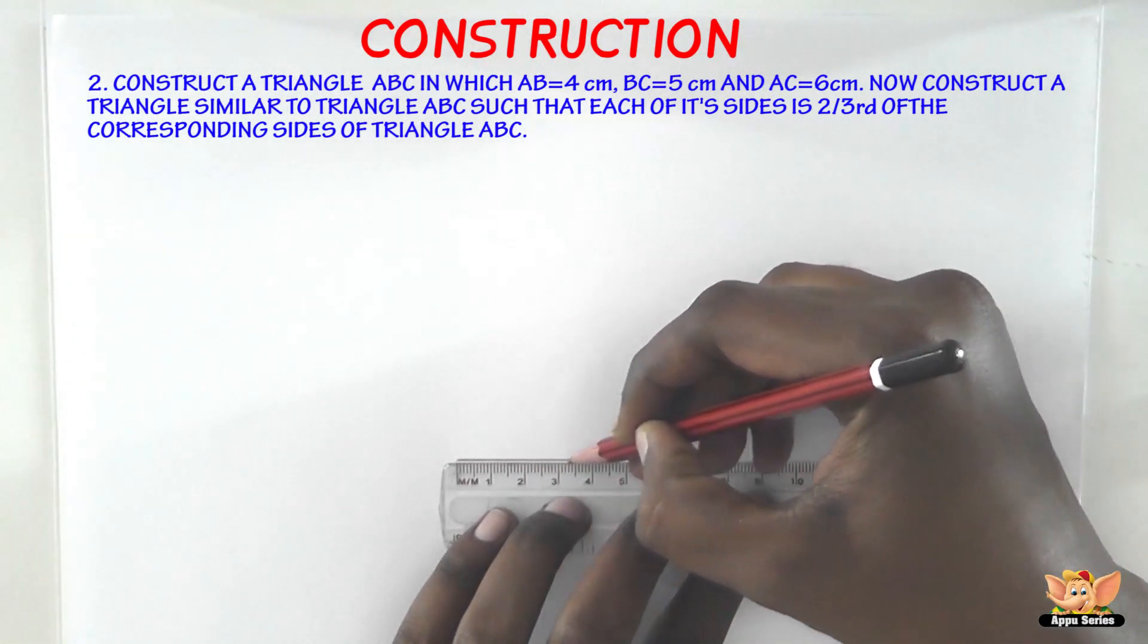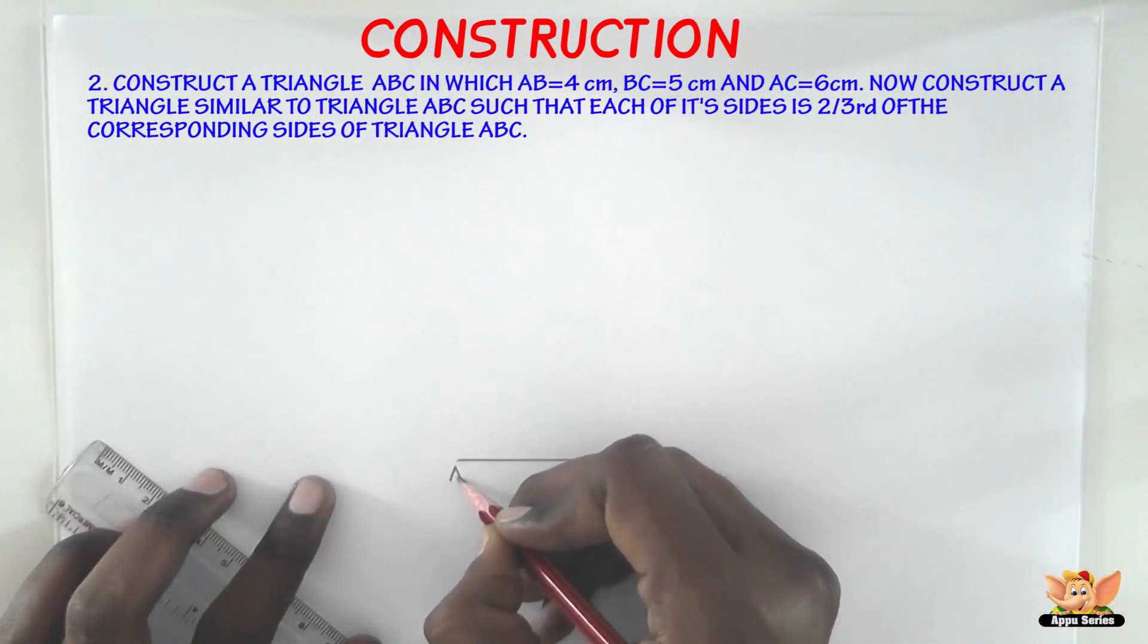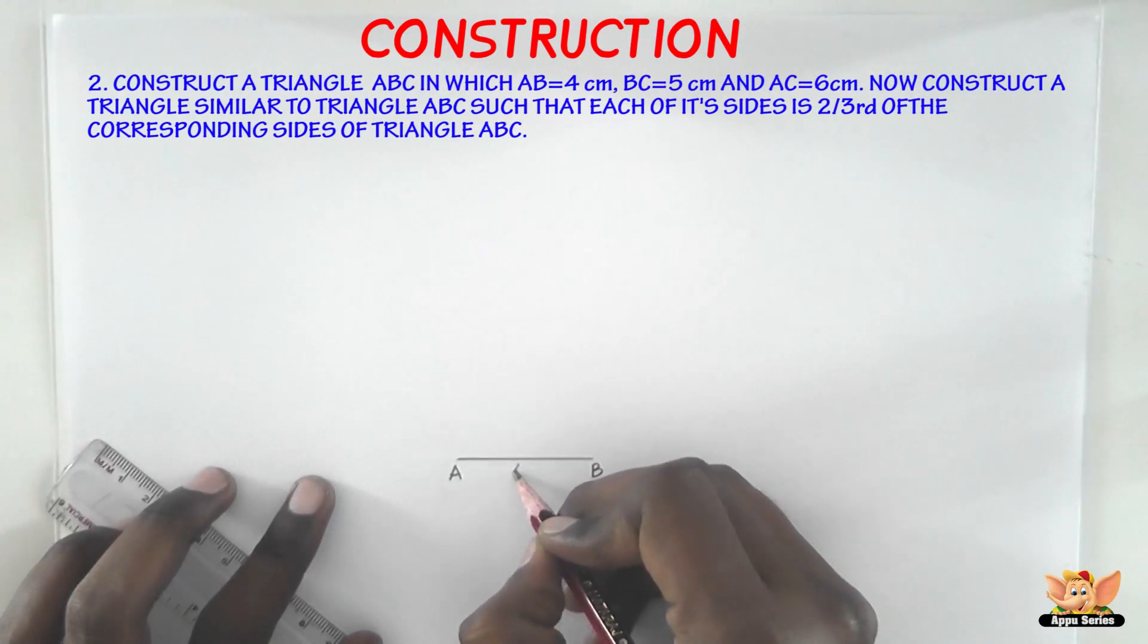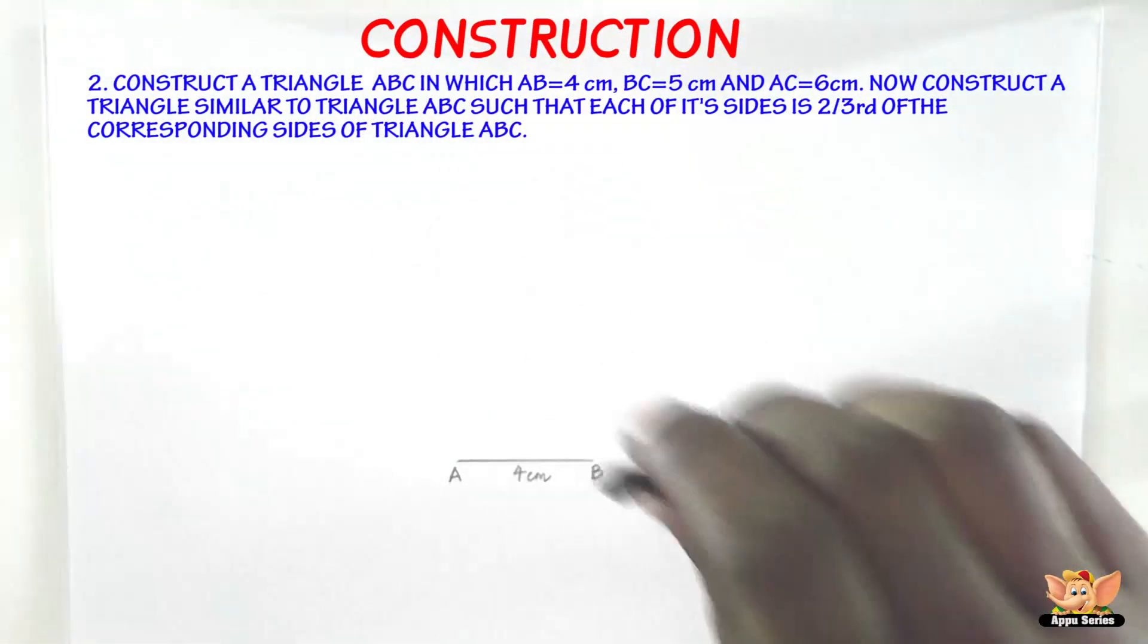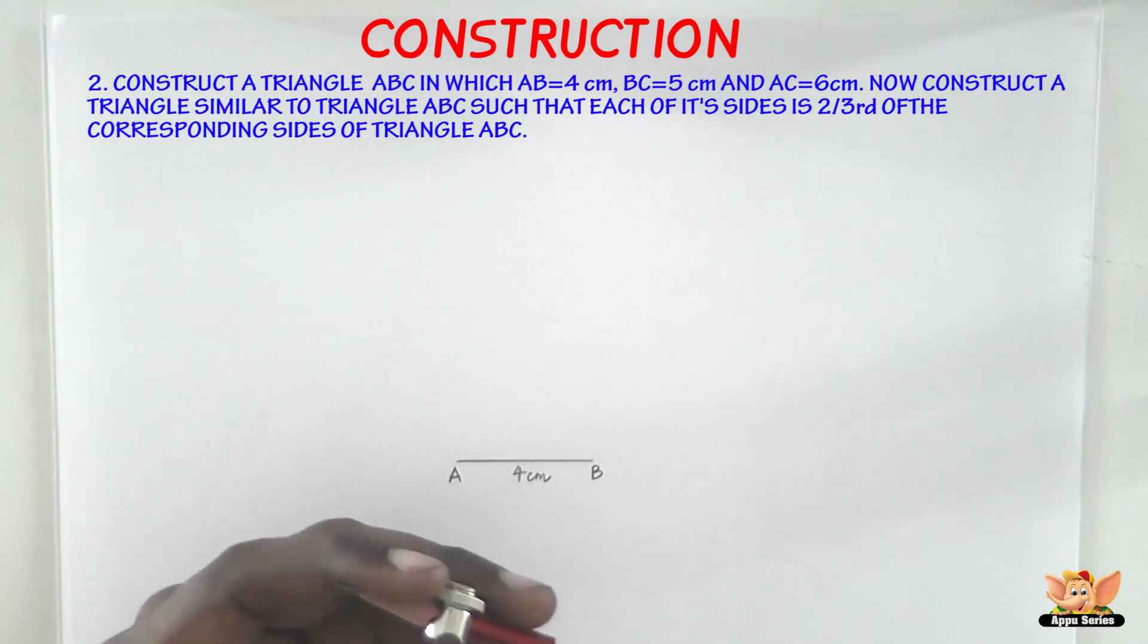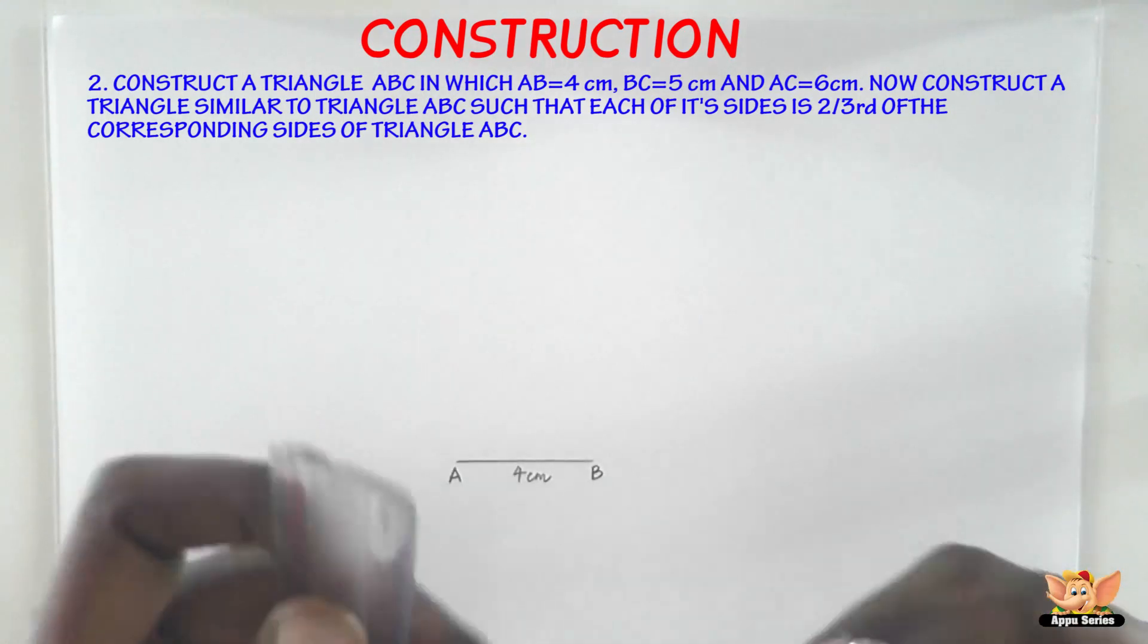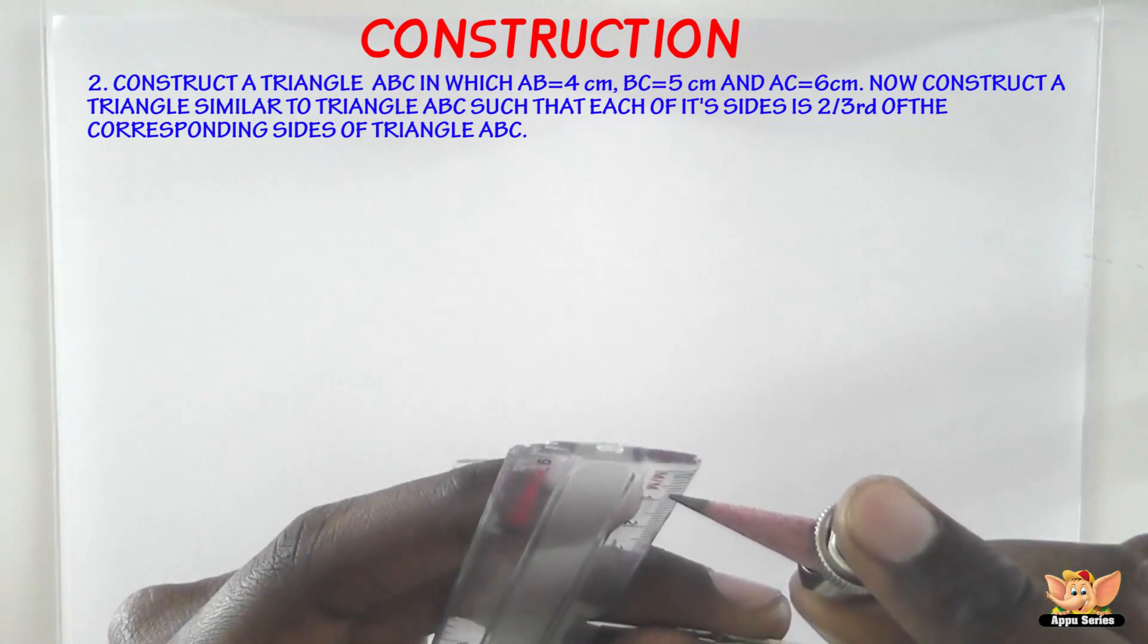So the first step here is to draw the line segment AB which is 4 cm in length. Now we need to complete the triangle. We need to draw the other two sides. The other two sides measure 6 cm and 5 cm respectively. That is AC equals 6 cm and BC equals 5 cm. So let us measure 6 cm on the compass now.